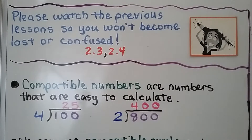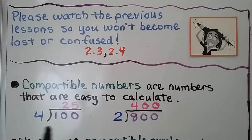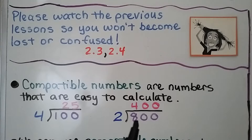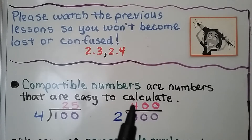We've learned that compatible numbers are numbers that are easy to calculate. It's very easy to divide 100 by 4 — we can just think of a dollar split into four quarters, they're 25 cents each. If we have 800 and we split it in half, we divide it by 2, it's going to be 400.